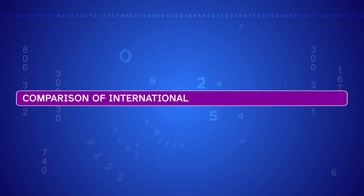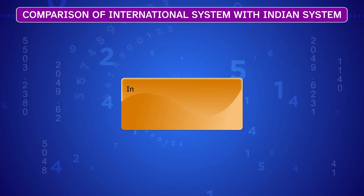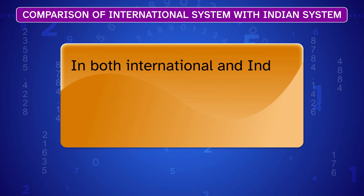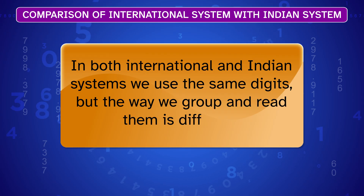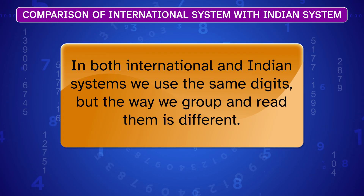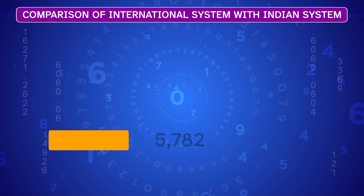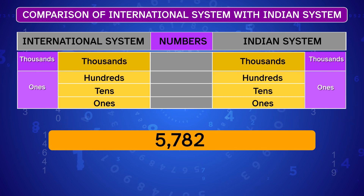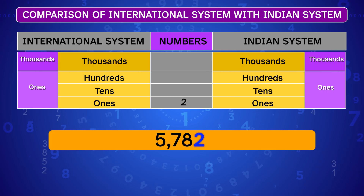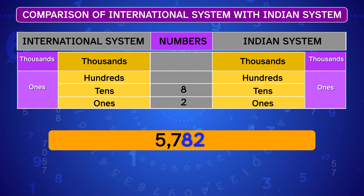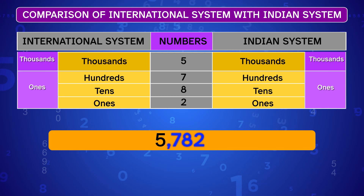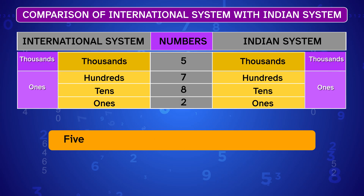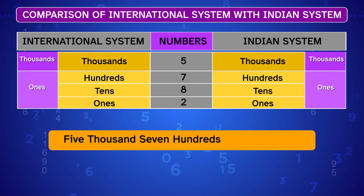Let's compare the International and Indian systems. In both systems we use the same digits, but the way we group and read them is different. Take the number 5,782: the two is in the ones place, the eight is in the tens place, the seven is in the hundreds place, the five is in the thousands place. In both systems, we read it as five thousand seven hundred and eighty-two.